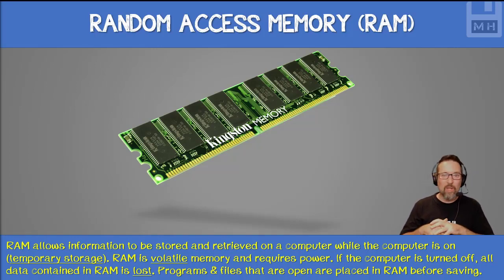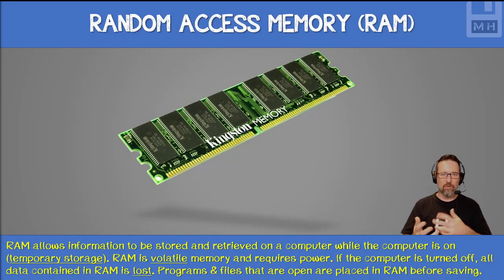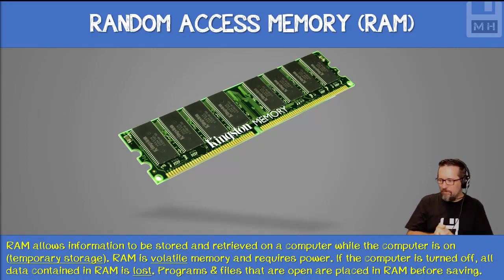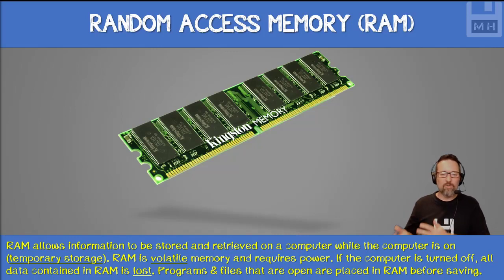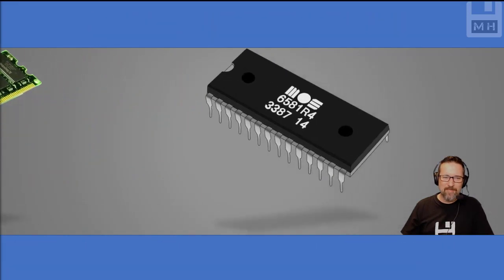RAM we also call a volatile memory. Volatile means it can change — it's always changing because we can constantly be putting different things into RAM. It's not a solid state. If the computer's turned off, we know we'll lose everything, and programs and files that are open are placed in RAM before any saving.